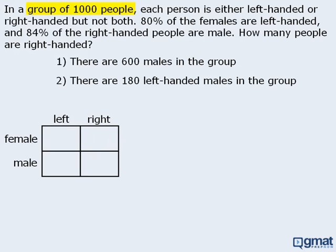We're told that there are 1,000 people altogether, so let's add that information here. Since we do not know the number of females in the group, let's assign a variable: let f equal the number of females. If there are 1,000 people altogether and f of them are female, then the total number of males in the group will equal 1,000 minus f.